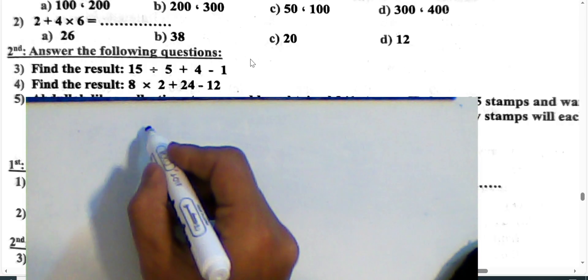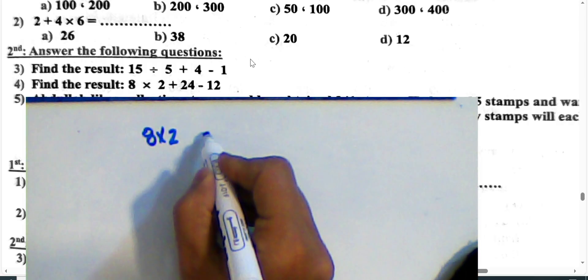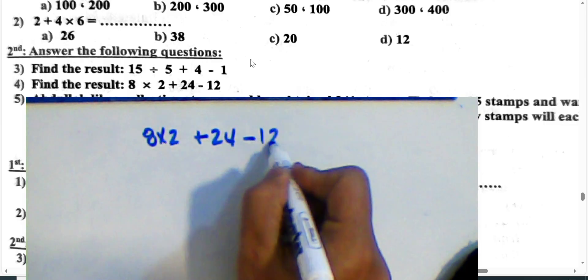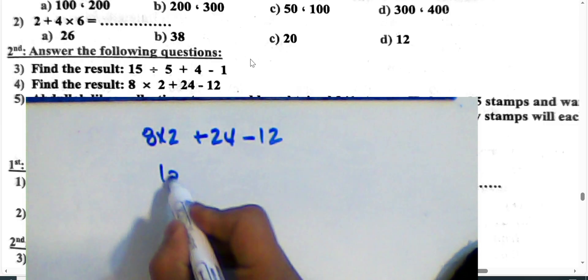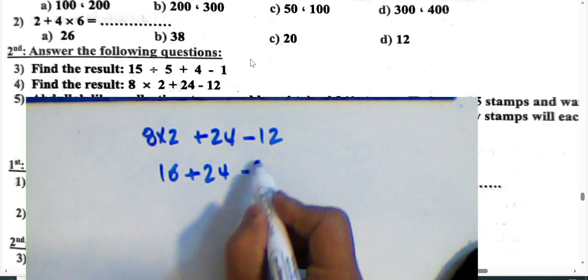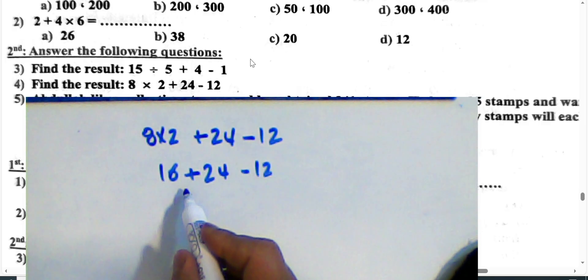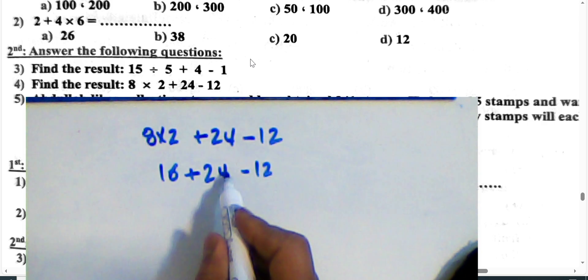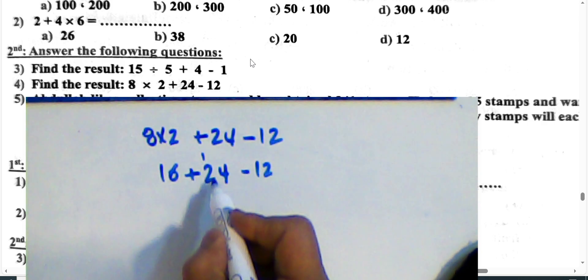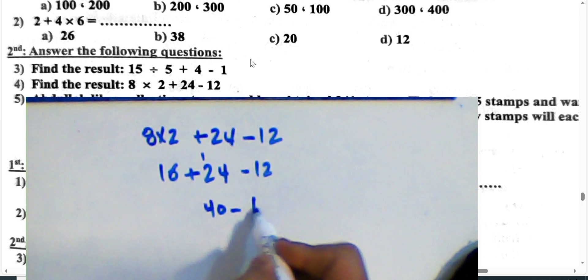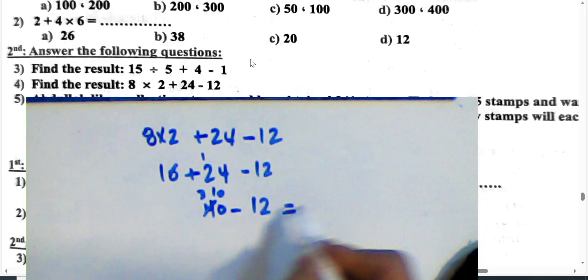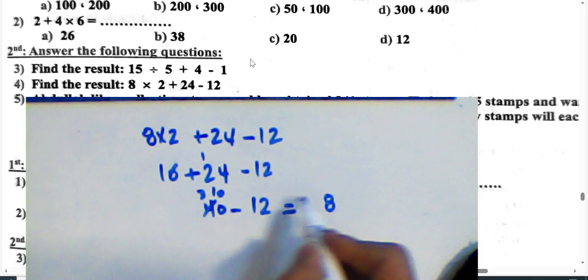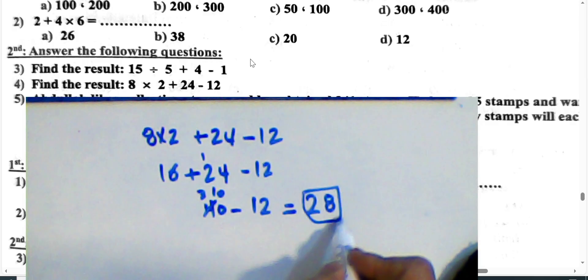Question 4: Find the result of 8 times 2 plus 24 subtract 16 plus 24 subtract 12. First, multiplication: 2 times 8 equals 16. Then: 16 plus 24 subtract 12. Adding 16 and 24 gives 40, and 40 minus 12 equals 28. The result is 28.